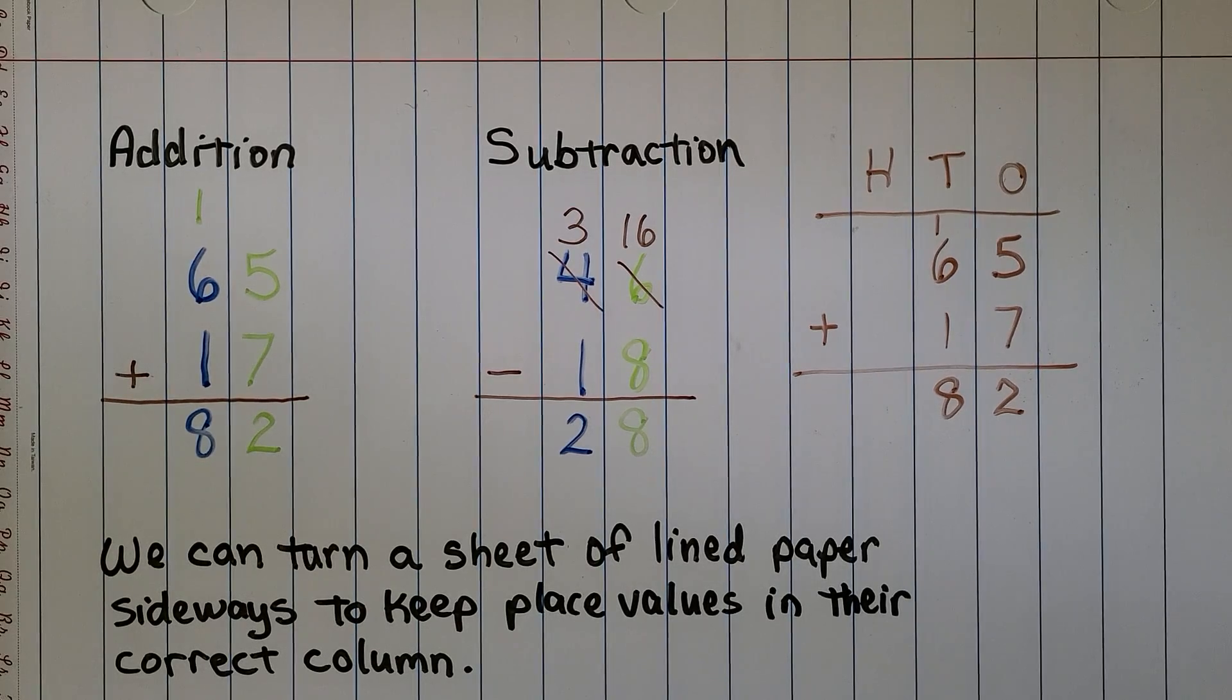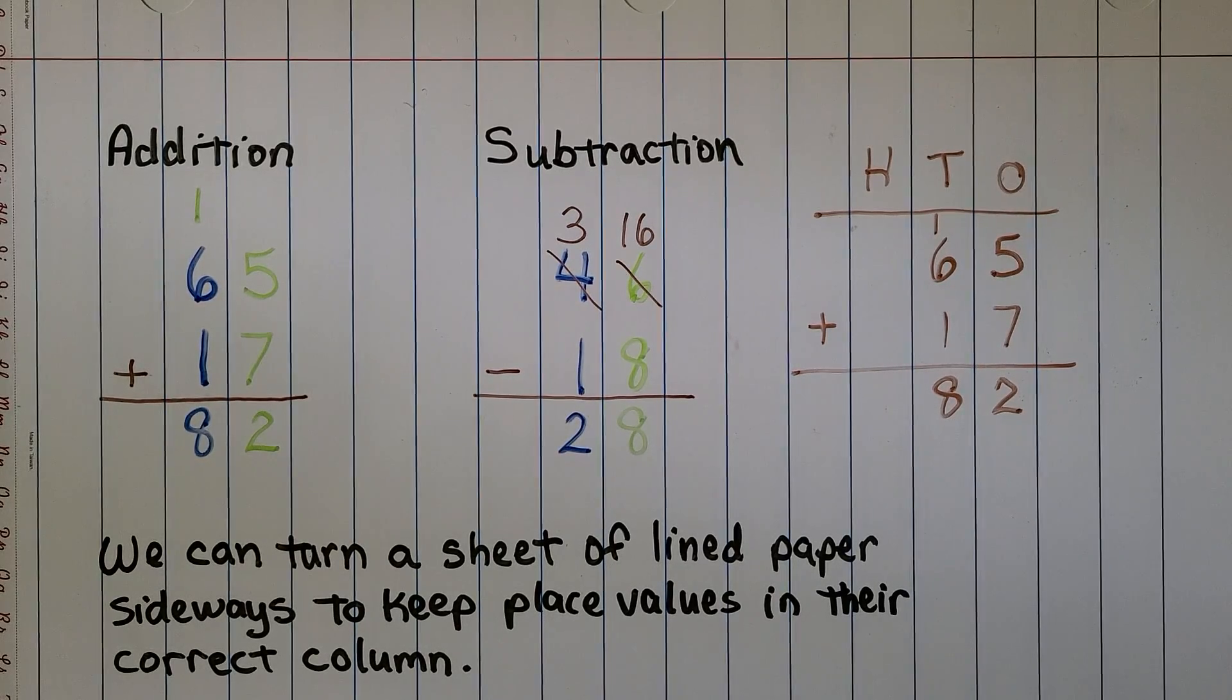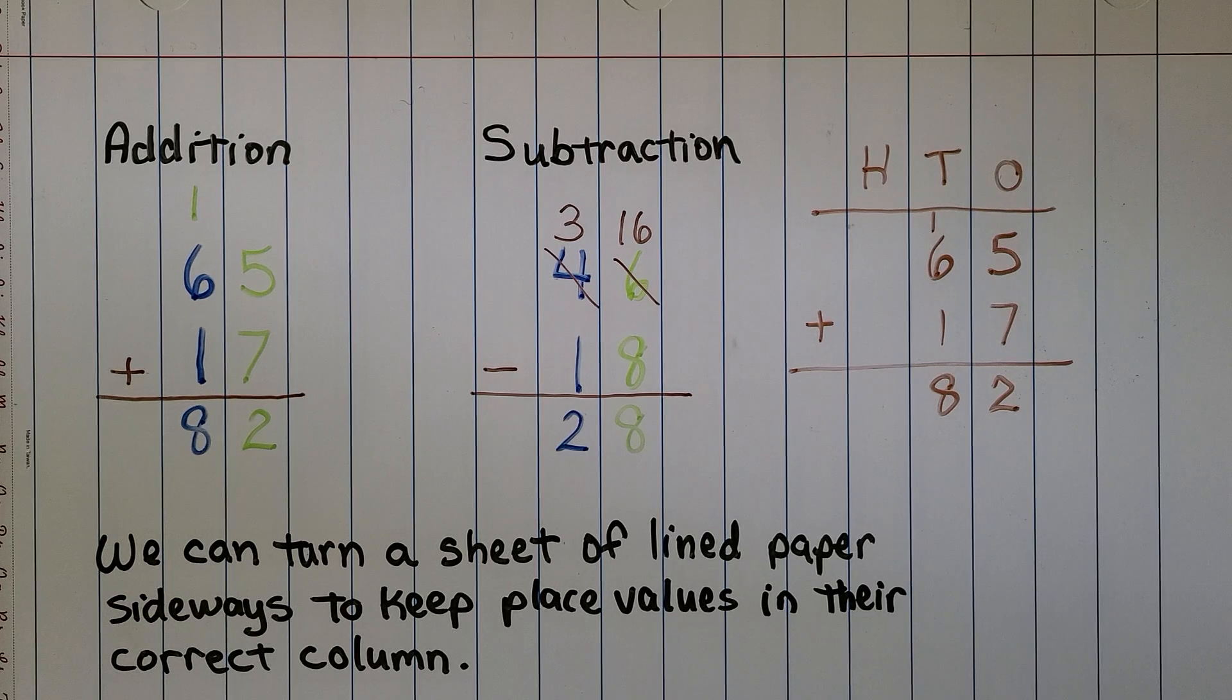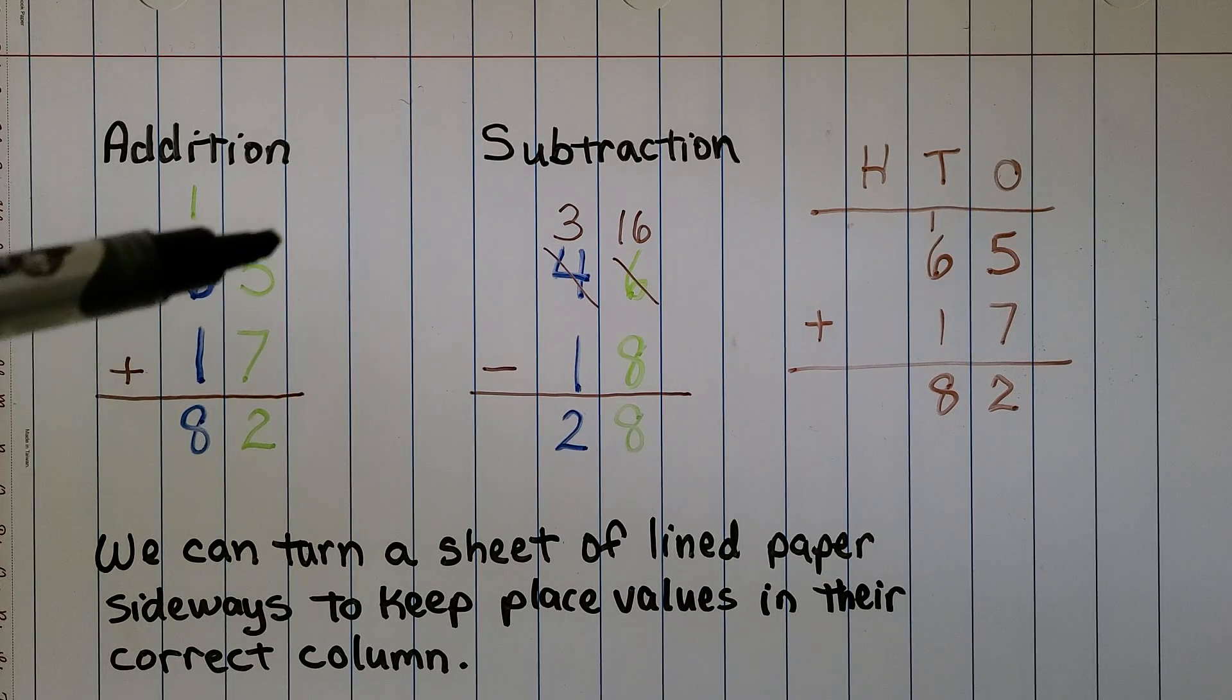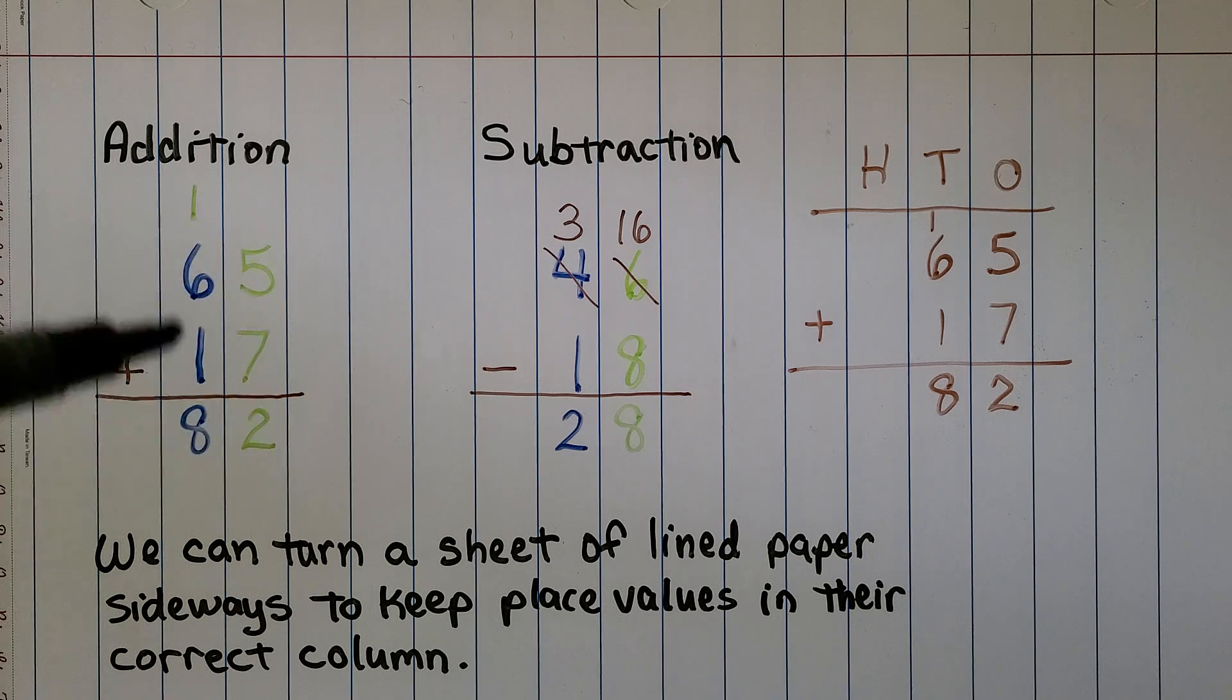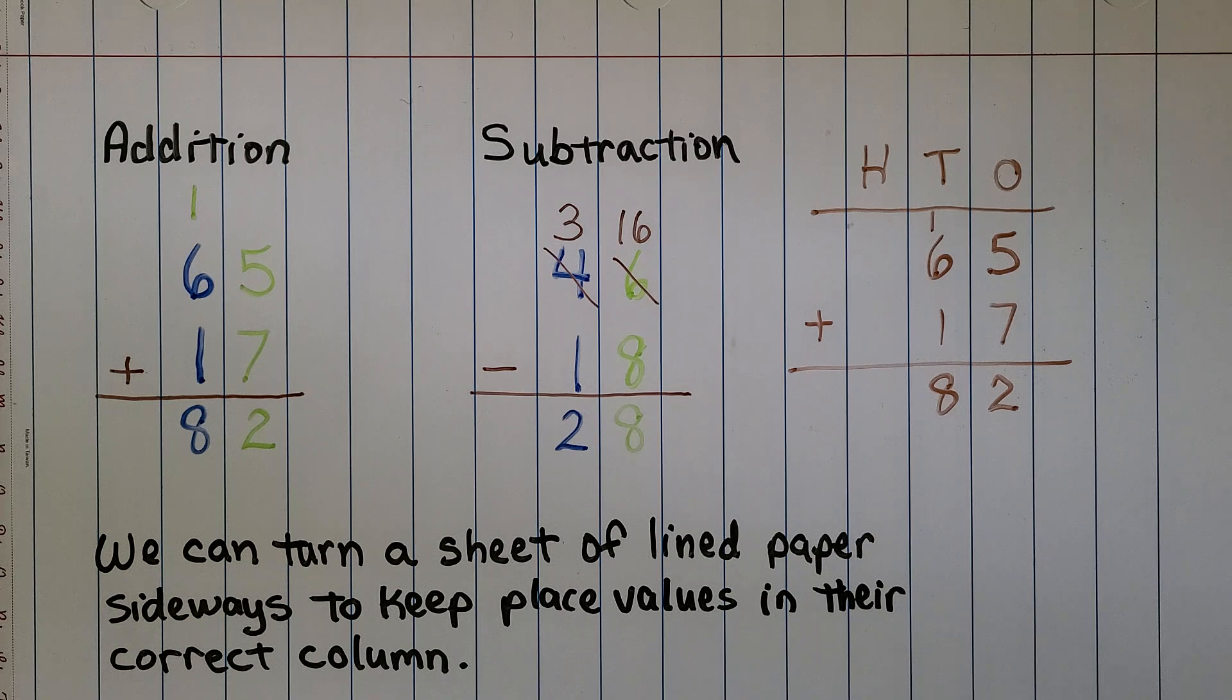Remember, we can turn a sheet of lined paper sideways to keep place values in their correct column. That way we keep our 1s with our 1s and our 10s with our 10s, and it helps us to get the correct answer. It keeps us from making a mistake.